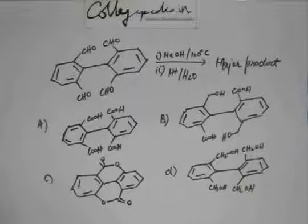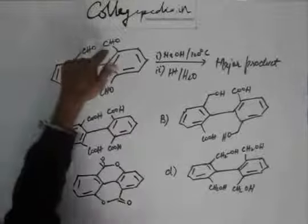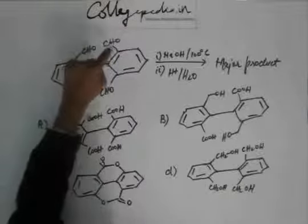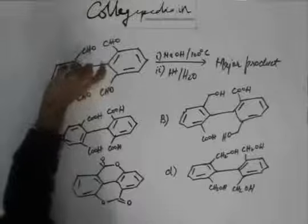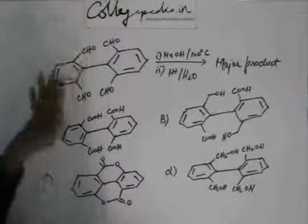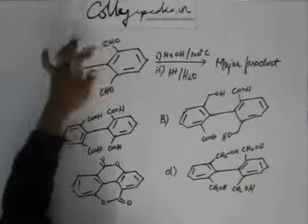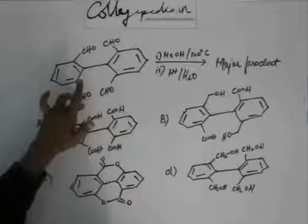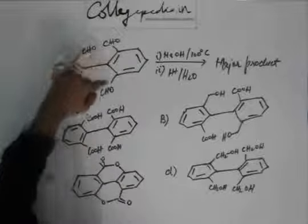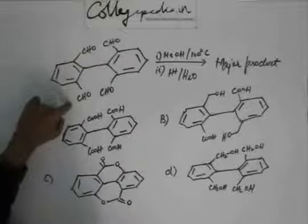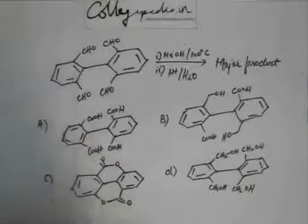Now start with Cannizzaro reaction. The major product: one of the aldehydes will be attacked by base. From one of the aldehyde, hydride ion will come out and it will attack another one of the aldehyde. Depending upon that, this could be acid and this could be alcohol. You can do all the permutation and combination that you can do.